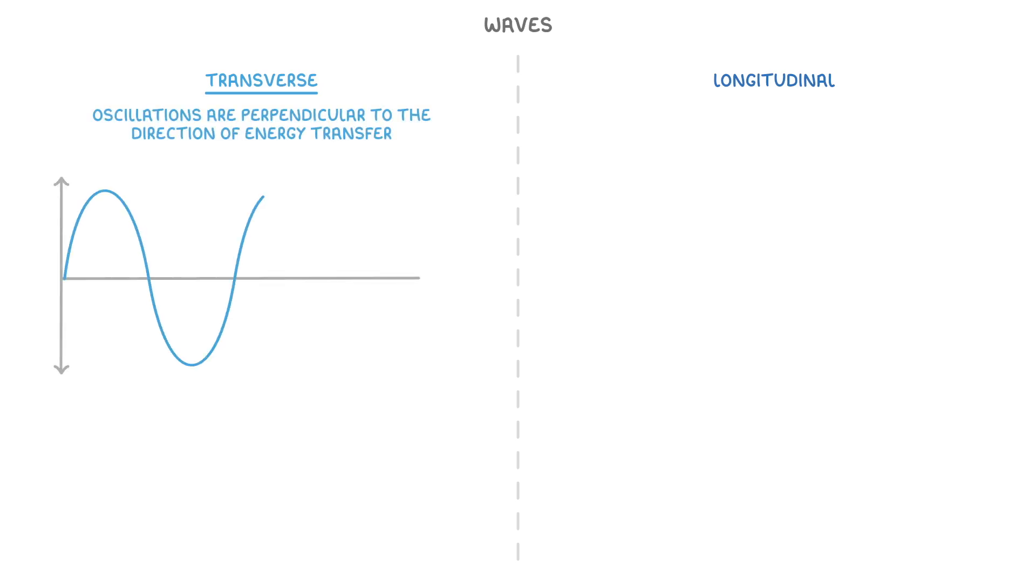The last thing we need to look at are the differences between transverse and longitudinal waves. In transverse waves, the oscillations are perpendicular to the direction of energy transfer, or the direction in which the wave is moving. Which is why on our drawing, the vibrations are going up and down, whilst the overall wave is travelling from left to right.